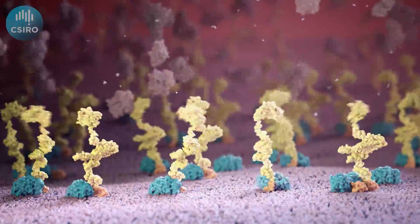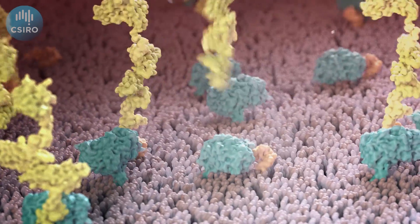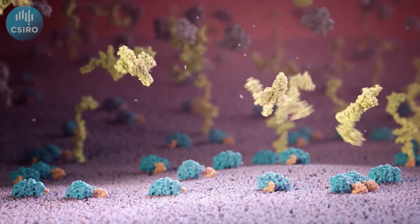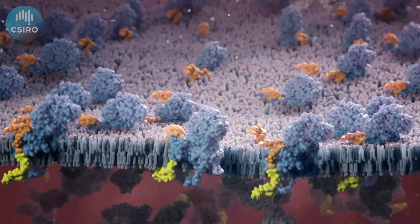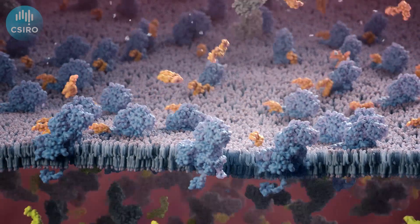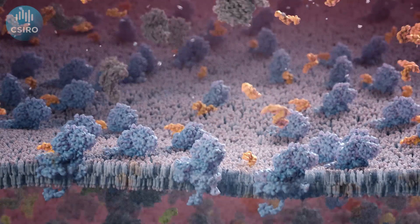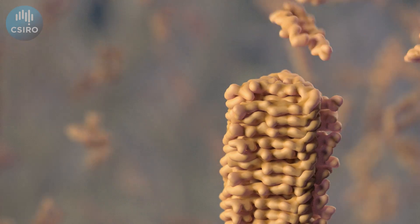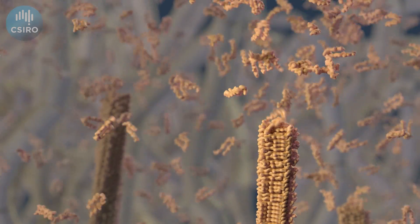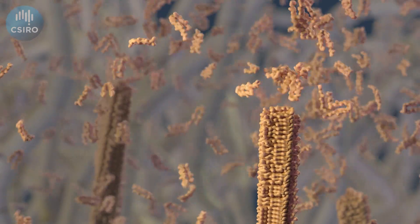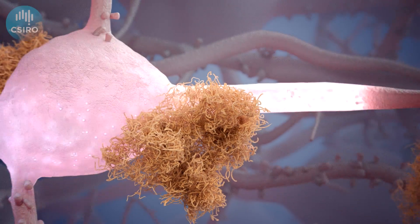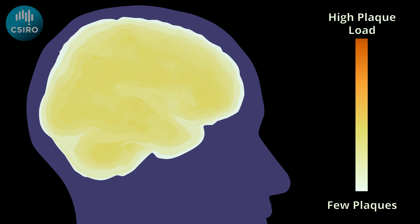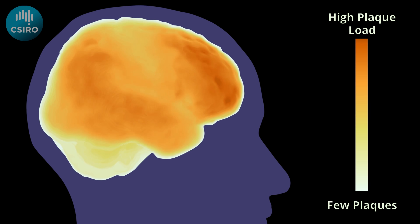The first step in this breakdown is done by an enzyme that cuts the part of APP that was previously outside the cell. This leaves a stub of APP embedded in the membrane. A second enzyme cuts the remaining stub, leaving smaller fragments that are then released from the membrane. Normally, these fragments are further broken down. But during Alzheimer's disease, one of the fragments escapes recycling and instead accumulates outside the cell. At higher concentrations, these fragments begin sticking together to form long fibres. The fibres clump together in masses called plaques.